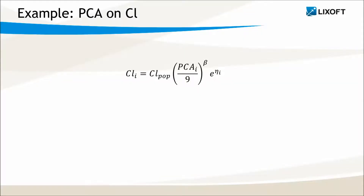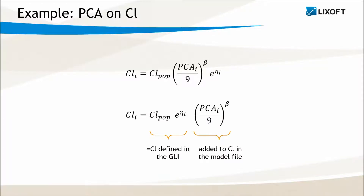Now let's assume I would like to define the following relationship with PCA on the clearance using a power law. I'm going to split the formula into two: the first part will be defined in the graphical user interface as usual, and the second part in the model file.